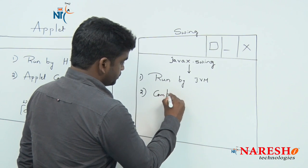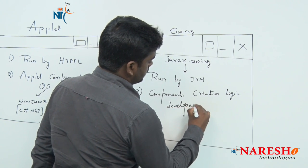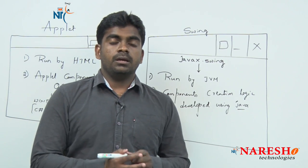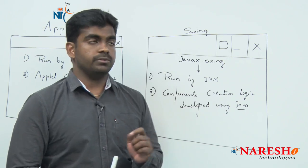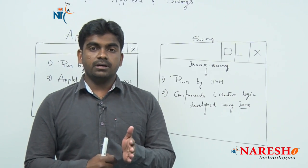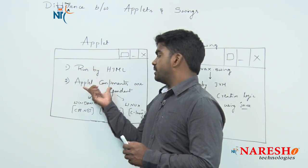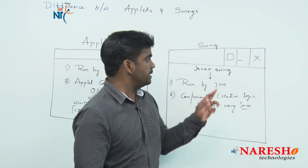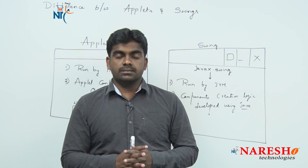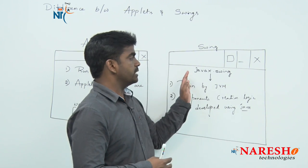The component creation logic is developed using Java only — no need to depend on any other programming language to create the components of Swing. This is the major difference between Applets and Swings in Java GUI applications. Applets run by HTML and their components are platform dependent, but Swings run by JVM and their components are independent of the operating system. Whatever the operating system, the visibility and appearance of the program will not change from platform to platform in Swings.